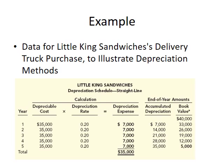The depreciable cost is $35,000, calculated as the original cost of $40,000 minus the residual value of $5,000. Our objective is to reduce the asset's value from $40,000 to $5,000, so in total we depreciate $35,000. Allocating equally over five years: $35,000 divided by 5 years gives depreciation expense of $7,000 per year.